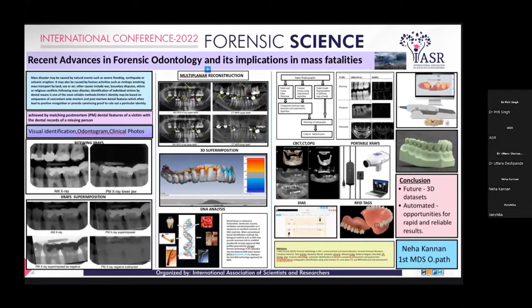Moving on to DNA analysis — an age-old method — there have been recent advances studied by various authors. DNA can be obtained from the pulp, as it is encased between the dentin and the enamel, and it can be used for NGS — next generation sequencing.